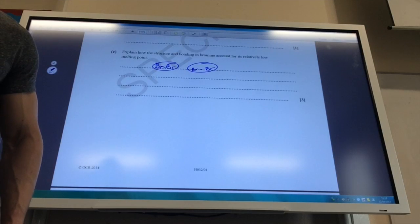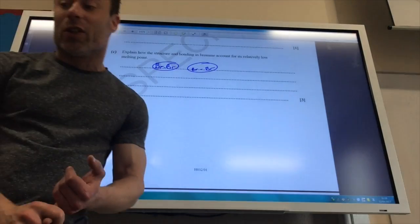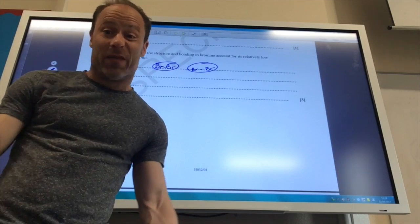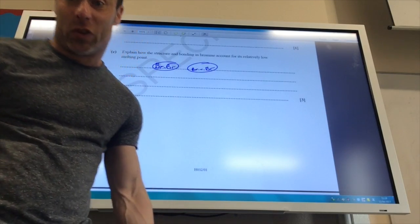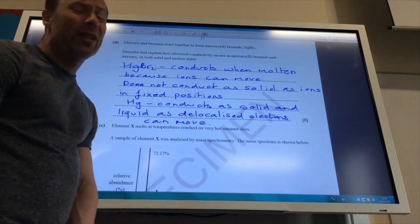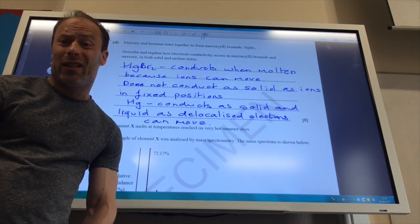So the main thing you need to do is weak London forces between the bromine molecules which are very easily overcome for two marks. So this is quite a nice question really. It's five marks for what is effectively GCSE.